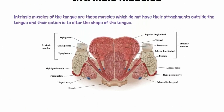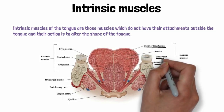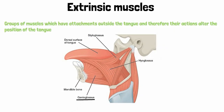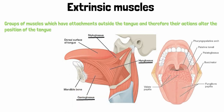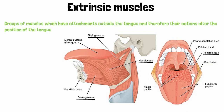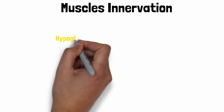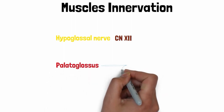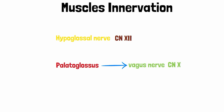Intrinsic muscles of the tongue include the superior longitudinal muscle, inferior longitudinal muscle, transverse muscle and vertical muscle. While extrinsic muscles include the genioglossus muscle which forms the majority of the tongue, the hyoglossus muscle, the styloglossus muscle and the palatoglossus muscle. All of these muscles are innervated by the hypoglossal nerve, which is the 12th cranial nerve, except the palatoglossus muscle which is innervated by the vagus nerve, the 10th cranial nerve. This makes the innervation easier to remember.